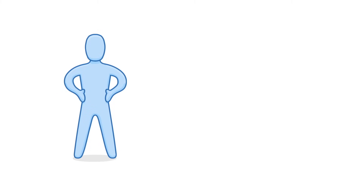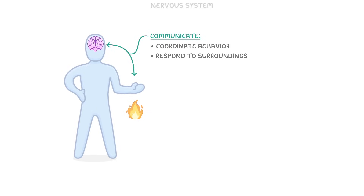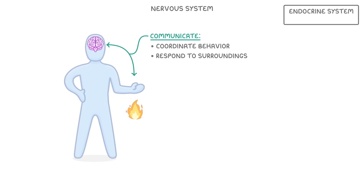When it comes to large multicellular organisms, like humans, the different parts of our body need some way of communicating with each other, so that we can coordinate our behaviour and respond to our surroundings. To do this, we rely on two different organ systems: the nervous system, which we will discuss here, and the endocrine system, which we will see in another video.